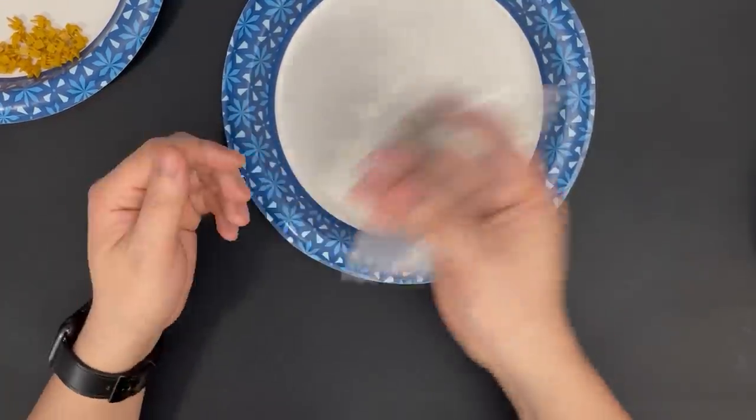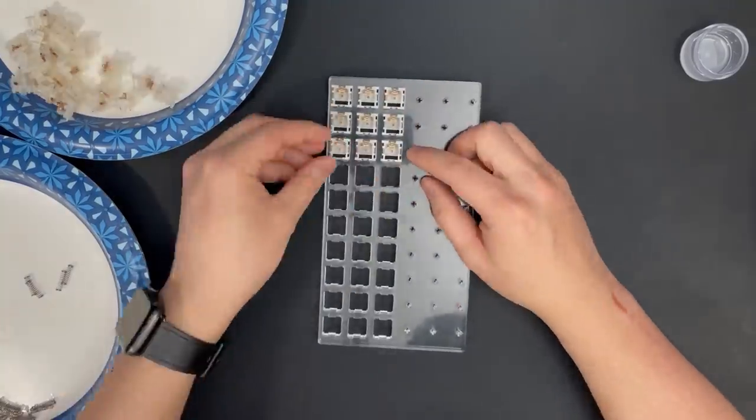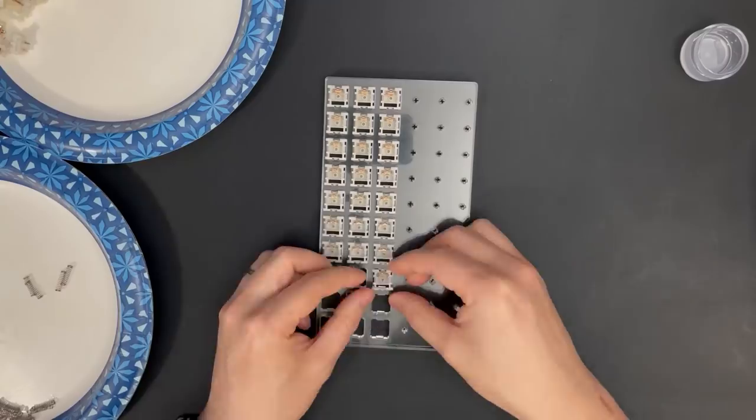If you have a lube station, it can help make the lubing go along faster. Mine lets me do 30 switches at a time, so let's just get the bottom housings placed in there.